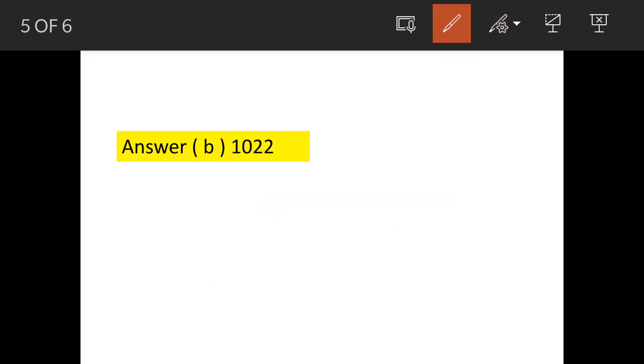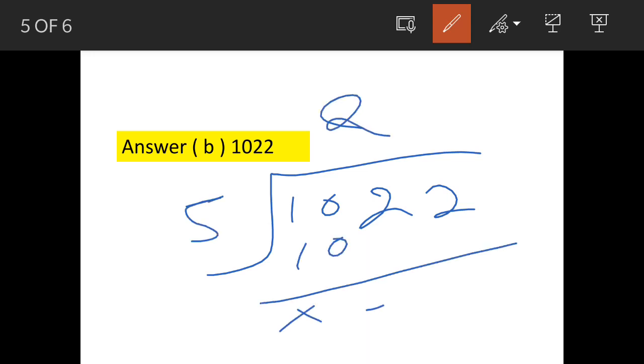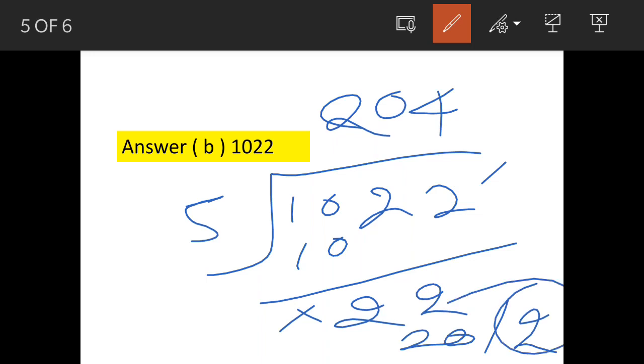Now we'll check with one of the numbers given. Let's say 1022, we'll divide it by 5. So 5 into 2 is 10, balance is 0, we carry over 2, you cannot divide it by 5 so 0. Now we carry over 2 again, 5 into 4 is 20, remainder is 2. So here also it is giving us a remainder of 2.